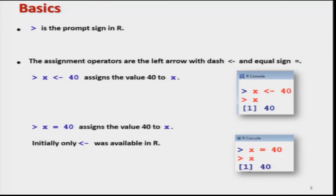As soon as you start the R software, on the console you get a greater-than sign. This is the prompt sign on the console, after which you write down commands for execution. You type the command after the prompt sign and press Enter, and the command will be executed.